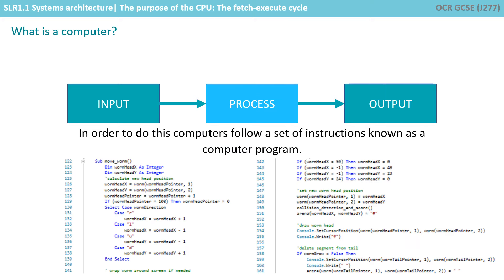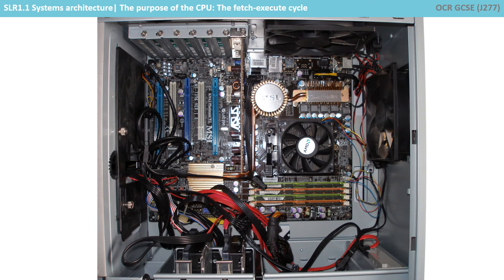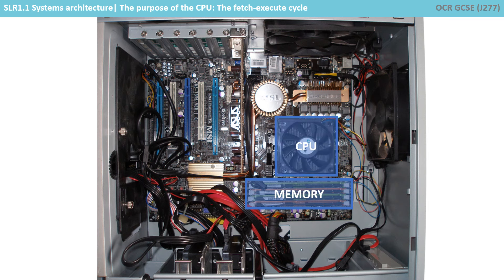To process data, a computer follows a set of instructions known as a computer program. If we take the lid off a typical desktop computer, we can identify two critical components: the memory, that stores the program, and the central processing unit, or processor, which is under this large fan and carries out the instructions.